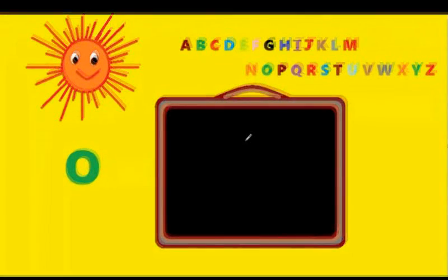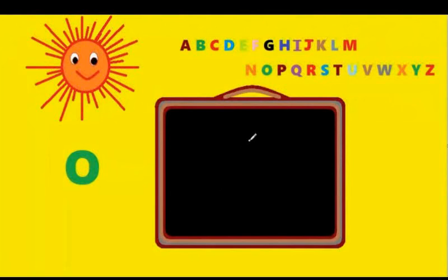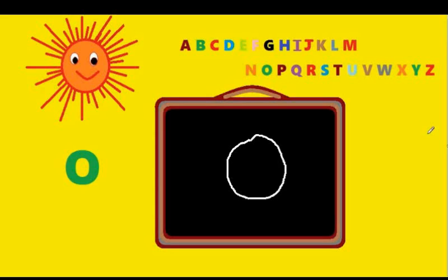O. You just have to draw a circle. Let's watch it again: you just have to go round the corner, round the corner. That's O.